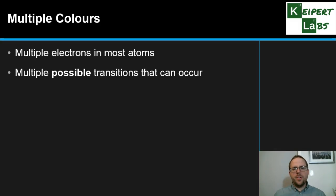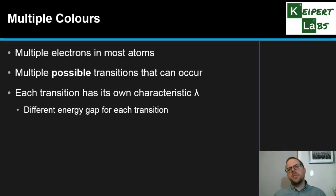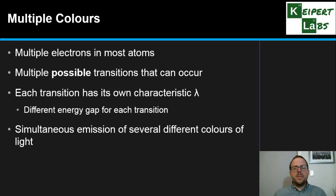Each electron can make multiple possible transitions, depending on how much energy is absorbed or emitted. When you add more and more electrons into the atom, you get lots of different possibilities. Each jump that an electron could make has its own characteristic wavelength of light given off as it drops back down, because each transition corresponds to a different energy gap.